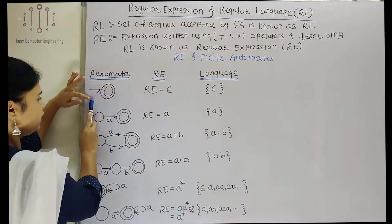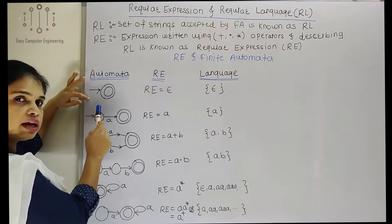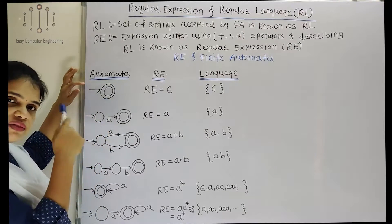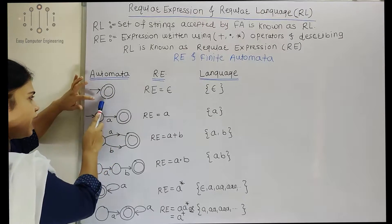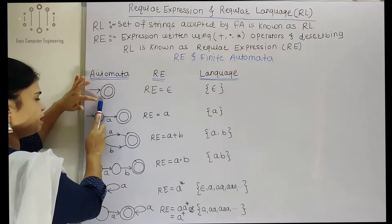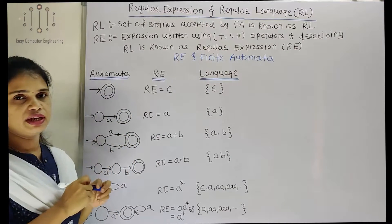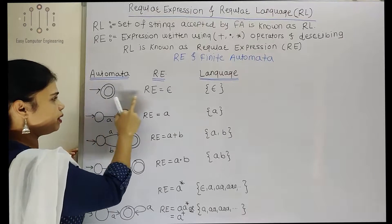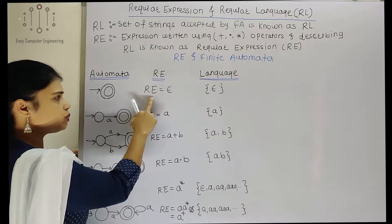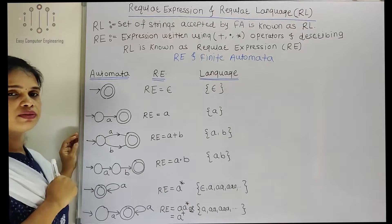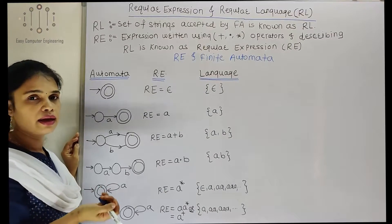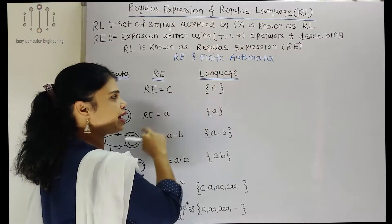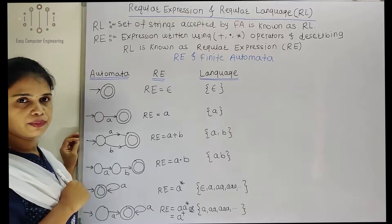Let us consider a finite automaton with one state which is both the initial state and the final state. If that is the case, then the regular expression is epsilon — meaning we can accept the null string. Our language will accept only the epsilon string.